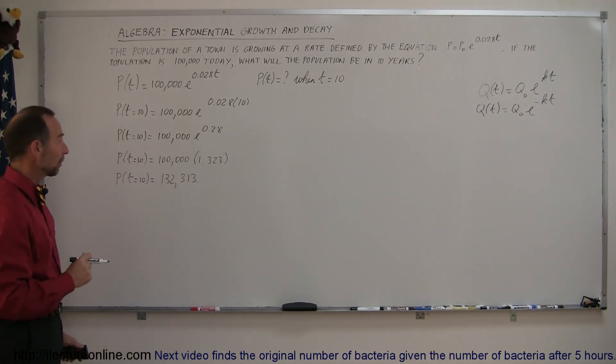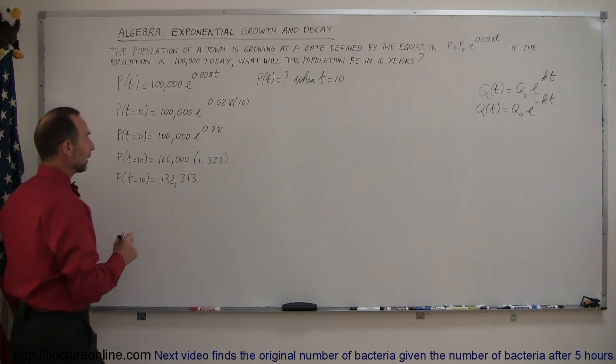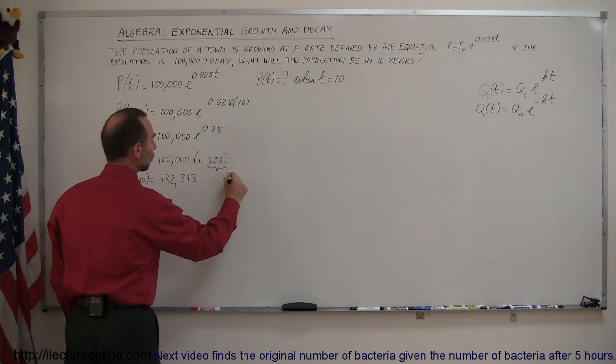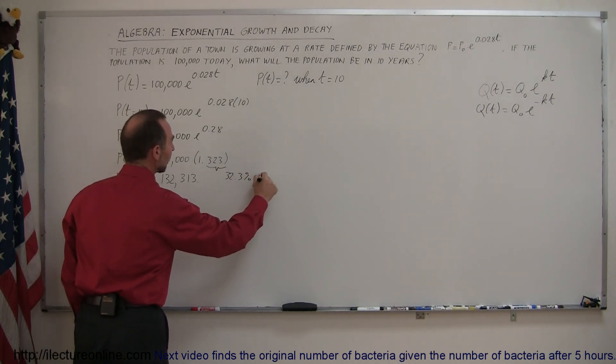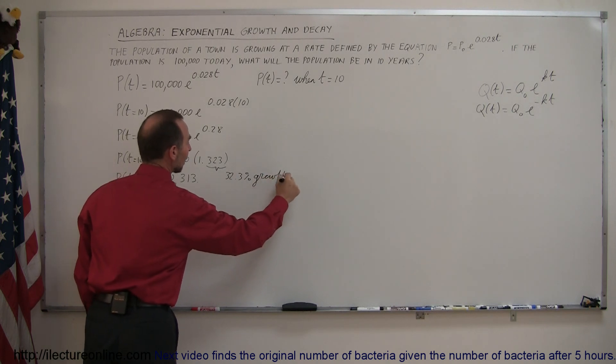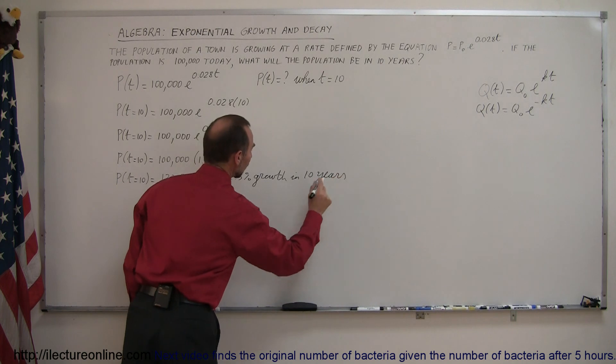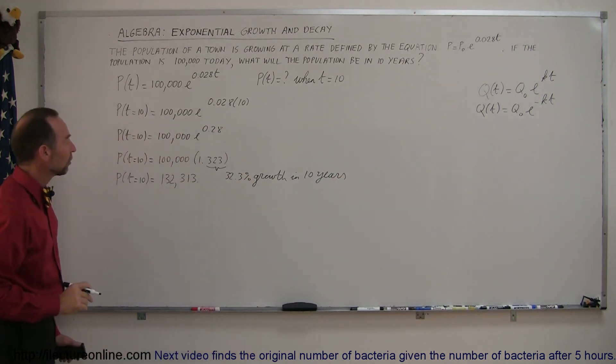And that's how you do problems like that. Now notice that the growth in percentage can be described by this. So this would be a 32.3% growth in 10 years. You can see how revealing that equation is and how you can glean information from that.